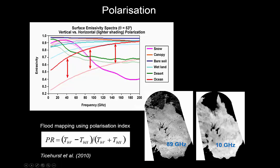Here's an example of flooding in Outback Australia in the Channel Country that you can see quite clearly on this 89 gigahertz — so quite high frequency — imagery. The image is quite sharp and you can clearly see water bodies stand out here.